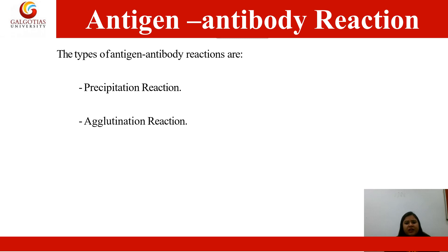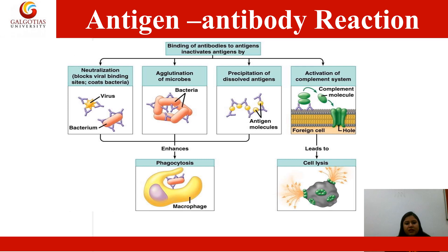There are different types of antigen-antibody reactions. The first is the precipitation reaction and the second is the agglutination reaction. Binding of antibodies to antigens inactivates antigens by neutralization, blocks viral binding sites, and causes bacterial neutralization as shown in the figure. Next is the agglutination of microbes, then the precipitation of dissolved antigen. Surface antigens react with microbes, and there will be activation of the complement system — a cascade which helps in lysis or phagocytosis of foreign substances.